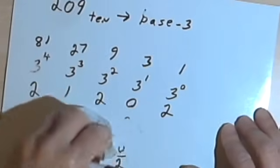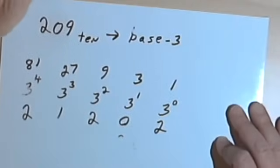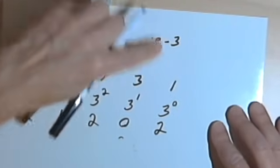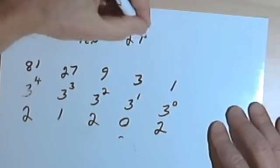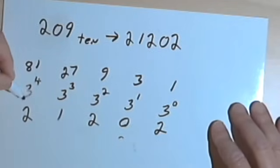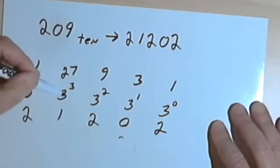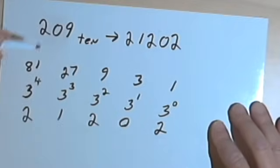So it looks like my answer is 21202. So 209 base 10 should equal 21202 base 3. We can check this by multiplying 2 times 3 to the 4th, or 81, and 1 times 3 to the 3rd, or 27 — do that for all these numbers, add them up, and make sure we get back to 209.